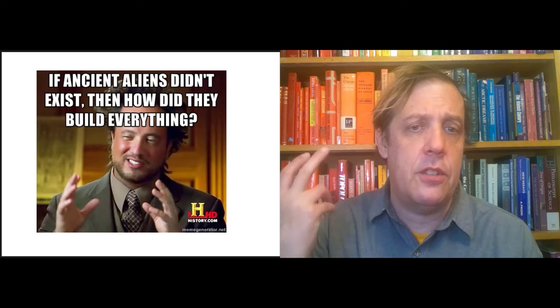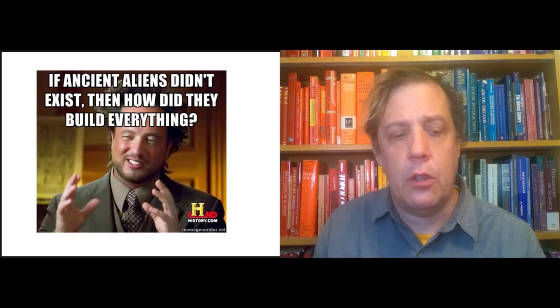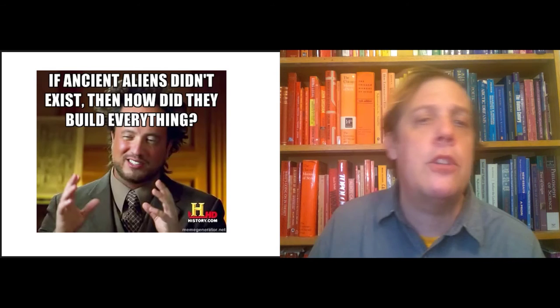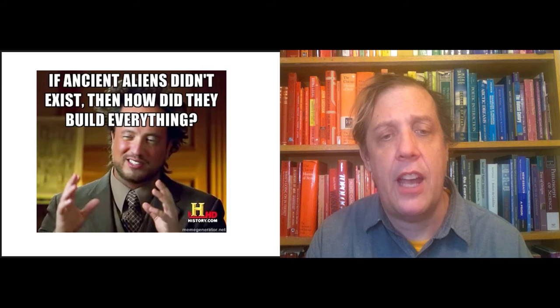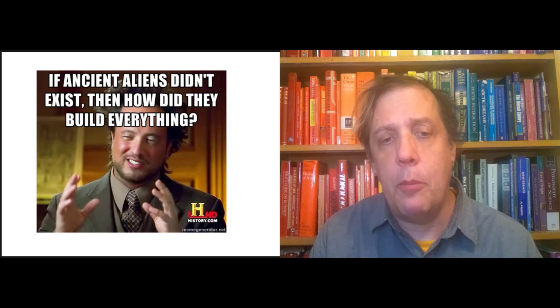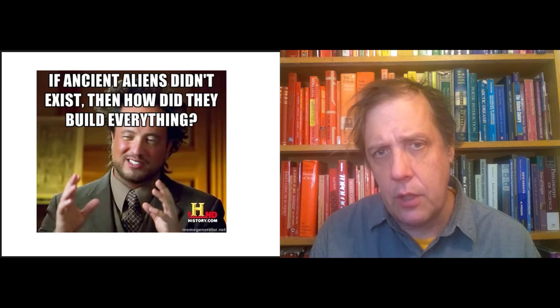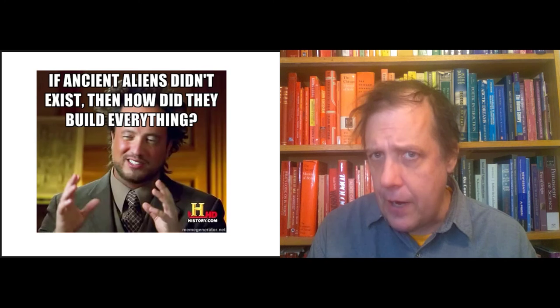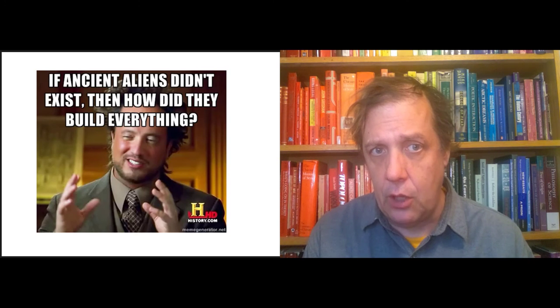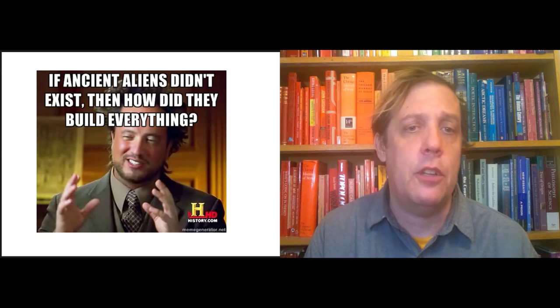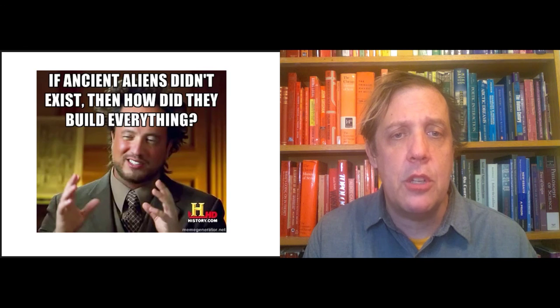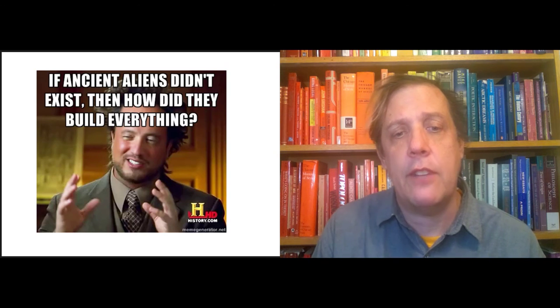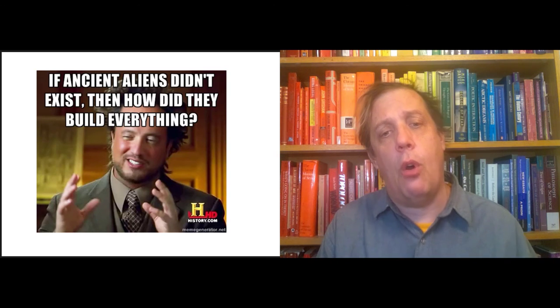The premise here is that ancient aliens built everything, therefore they must exist. But of course you wouldn't believe that the ancient aliens built everything unless you already believed they existed, so the argument is circular. So that's just a warning: don't represent Socrates or Crito's arguments as circular. And that's a danger that you can fall into because there's a fair amount of repetition in these dialogues, so you need to be careful about it. Great! So read the Crito, find an argument, submit the argument to the Dropbox, and then I've got a video on the Crito.